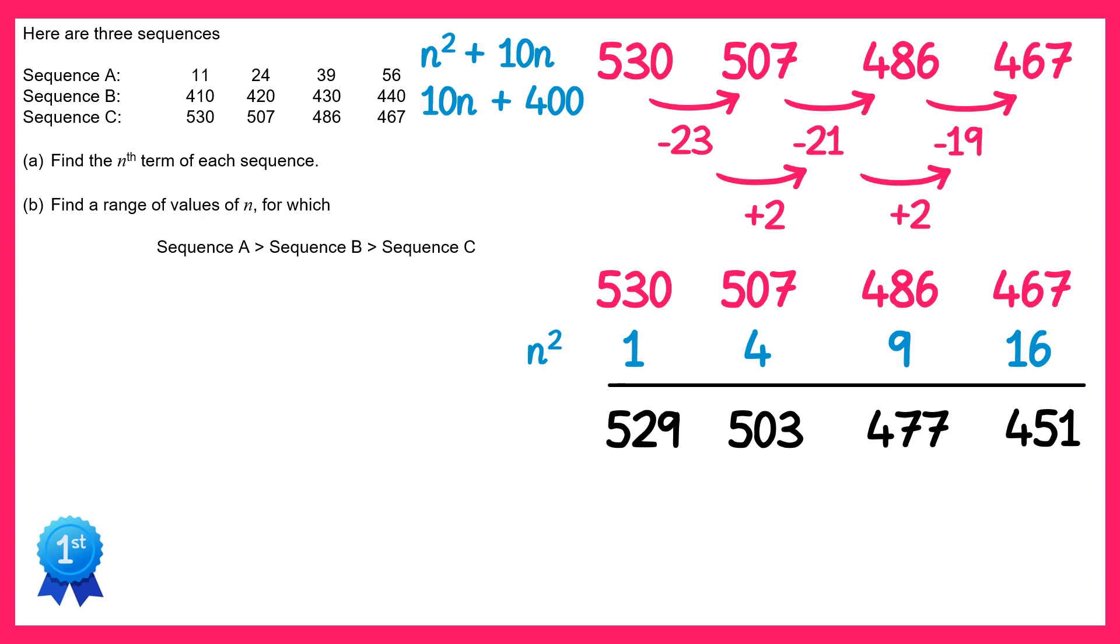We can find the nth term of it by looking at the common difference. In this one it's always take away 26, so the sequence must be take away 26n. But we don't want to start at negative 26, we want to start at 529, so we need to add 555. So the nth term of this linear part is negative 26n plus 555. This means the nth term of sequence C is n squared take 26n plus 555.